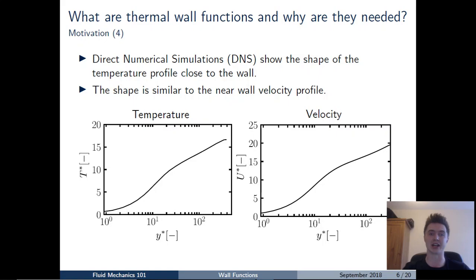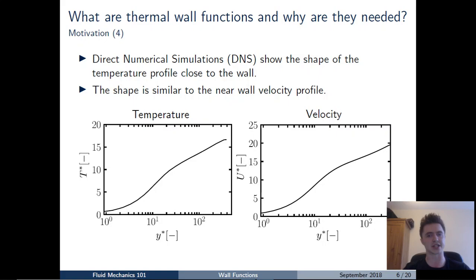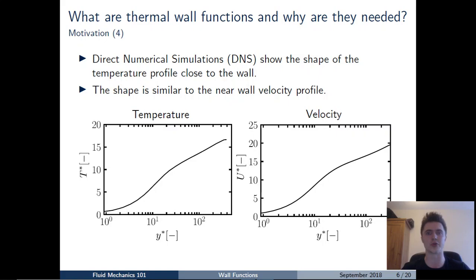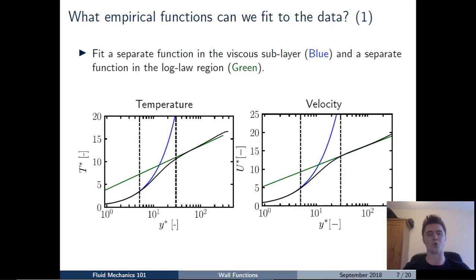Just as with the velocity wall functions, we use direct numerical simulation (DNS) data to show the shape of the real profile as we approach the wall. The two plots show temperature on the left and velocity on the right, and the overall shape of the profile as you approach the wall is actually very similar between temperature and velocity. This tells us we can probably use a similar approach for temperature as we did for velocity, though there are likely to be some small differences. Remember that in these near-wall plots the x-axis y-star or y-plus is on a logarithmic axis and the y-axis is linear, so that's not the actual shape of the profile.